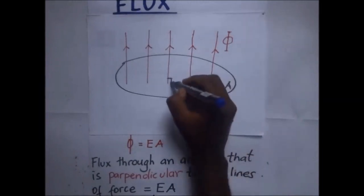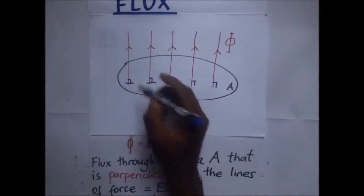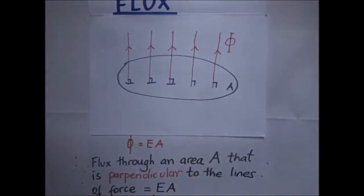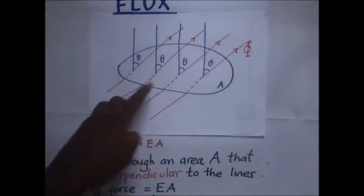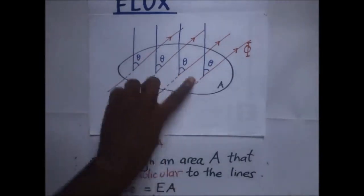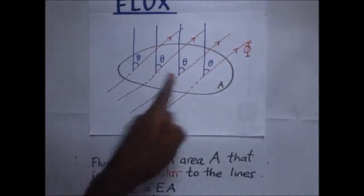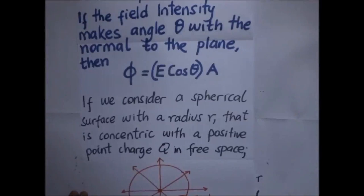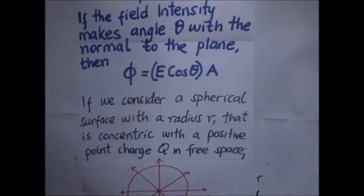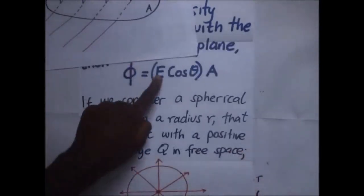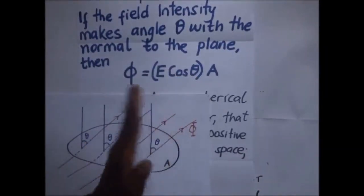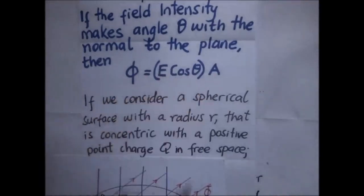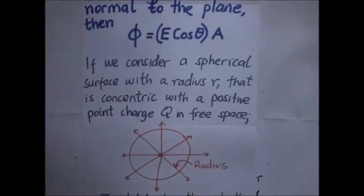The condition is that the field lines should be perpendicular — at 90 degrees — to the surface through which they pass. If the lines go through the surface at an angle theta rather than 90 degrees, we must resolve the field lines to the normal. If the field intensity makes an angle theta with the normal to the plane, then the electric flux is resolved to the normal, giving Φ = E times A times cosine of theta.